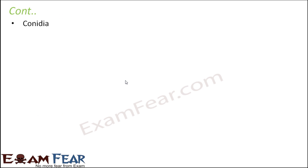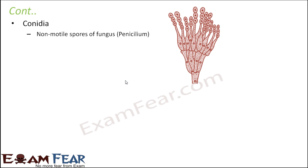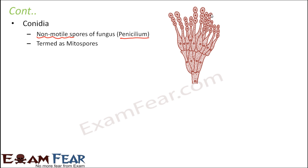Now let us look at some common spores seen in different organisms. First, conidia — generally seen in fungi. They are non-motile spores, meaning they cannot move from one place to another. They are mostly seen in penicillium, which is a fungus. They are also called mitospores, and these spores are capable of giving rise to new organisms.